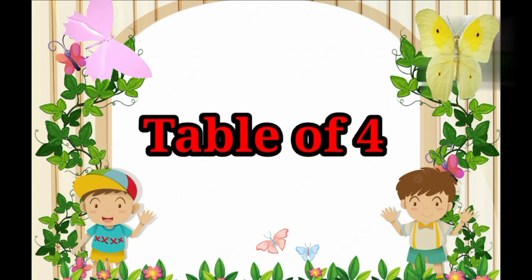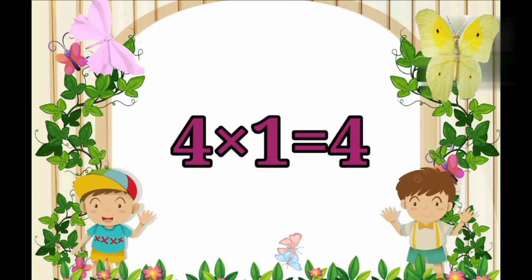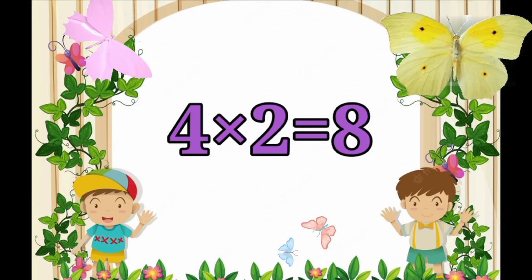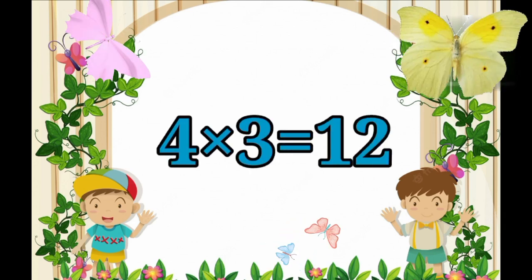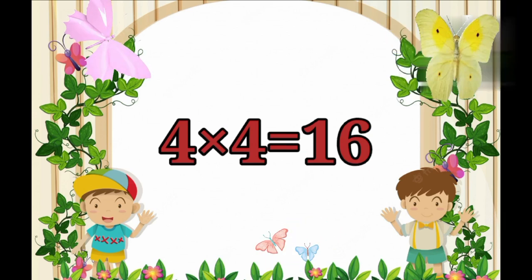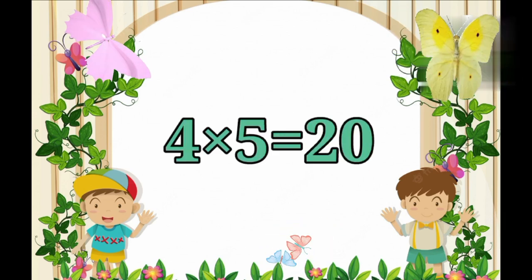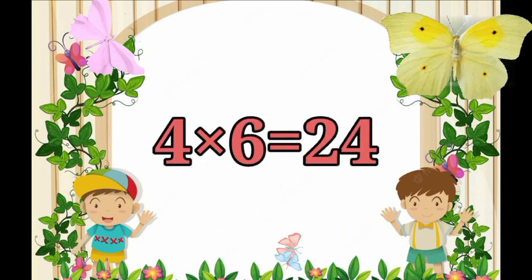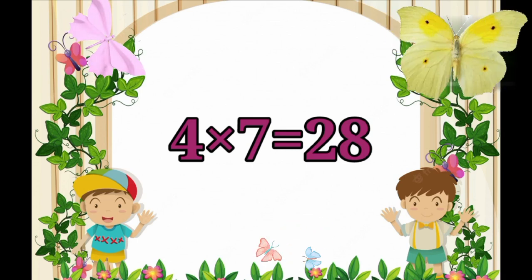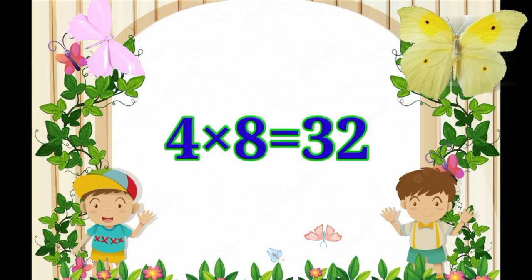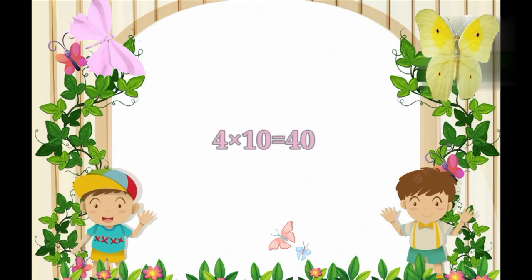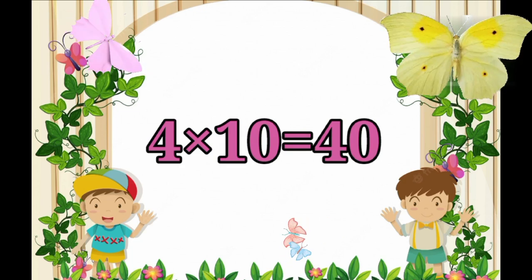Table of 4. 4×1=4, 4×2=8, 4×3=12, 4×4=16, 4×5=20, 4×6=24, 4×7=28, 4×8=32, 4×9=36, 4×10=40.